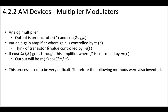The first device we're going to discuss that can create a modulated signal is the multiplier modulator. This is a type of analog multiplier. Like all modulators, we want the output to be a product of the message multiplied by a cosine at a single carrier frequency, FC. So we're looking at devices that multiply our message signal with a carrier cosine wave.